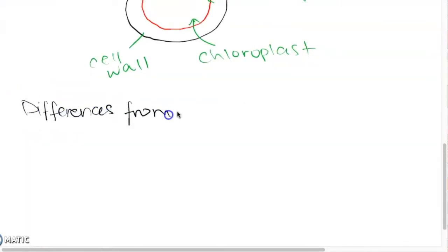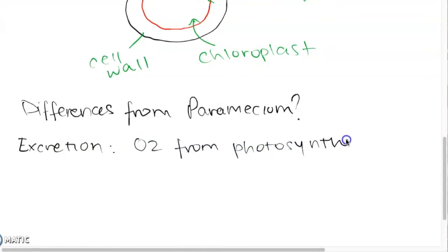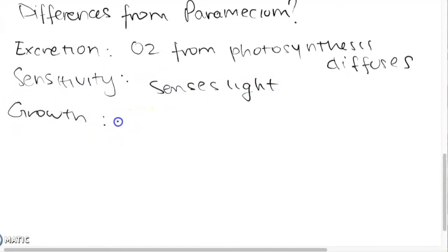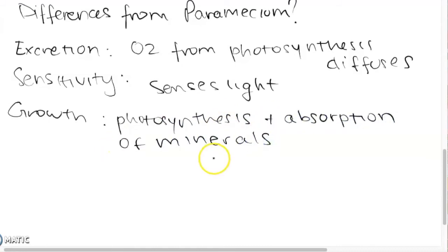So we can see that the main difference between these two organisms is the chlamydomonas uses photosynthesis as its form of nutrition. Even if the excretion is done through diffusion it is O2 from photosynthesis rather than from respiration. The sensitivity is also different like we said before. Growth is different because it absorbs minerals and accumulates mass through photosynthesis and again the main difference is the fact that the chlamydomonas has a chloroplast and therefore is able to conduct photosynthesis. If you remember chloroplast is often found in plant cells.